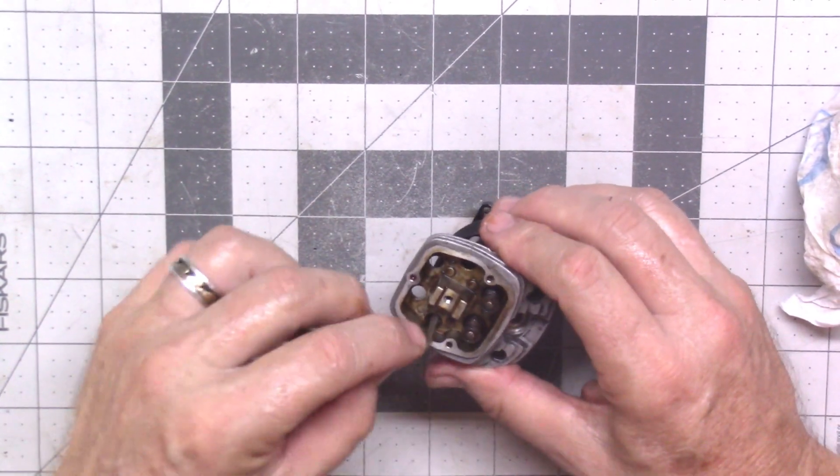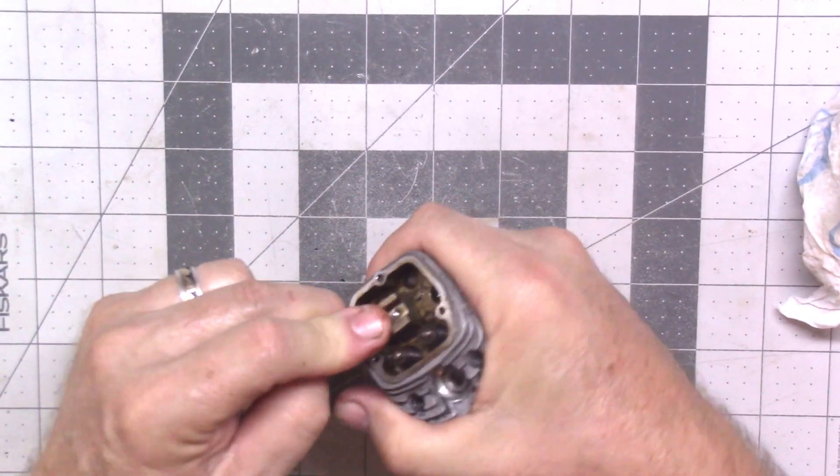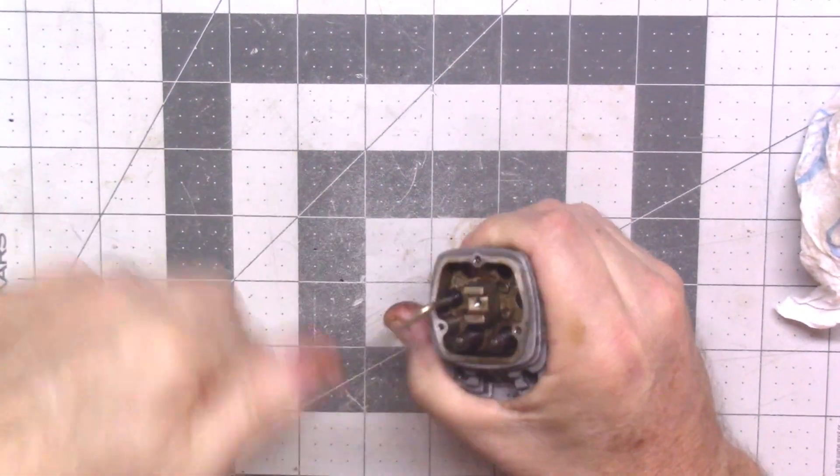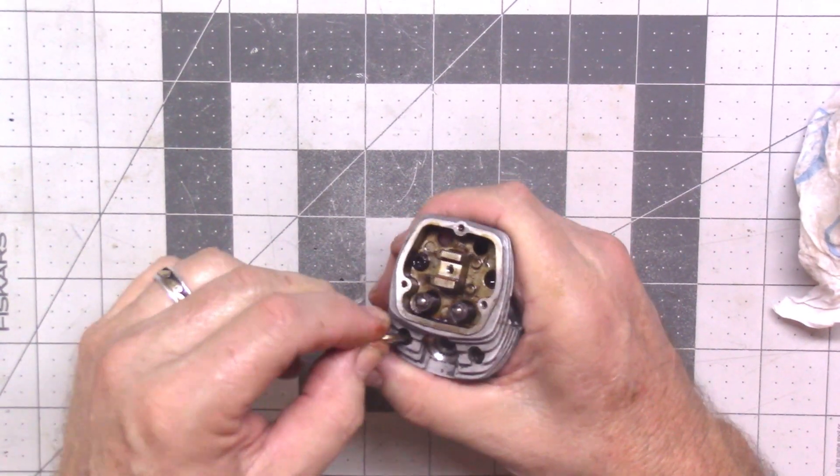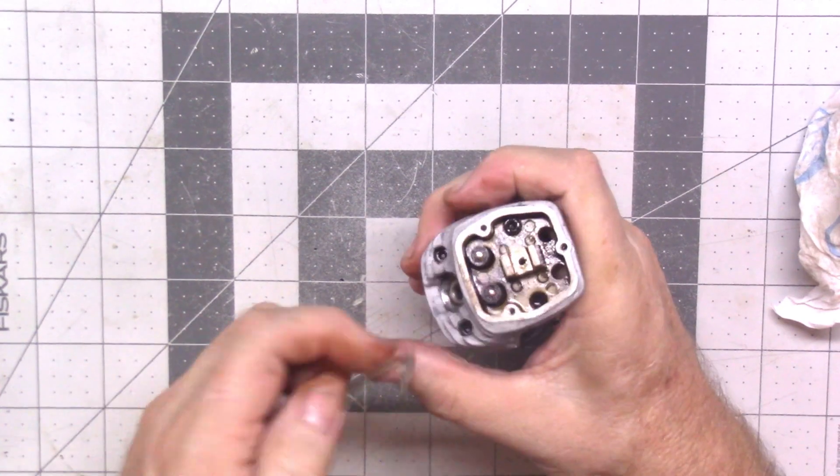This is where it might have been more intelligent to take the head off first because then I would have had the whole engine to grab onto and use as leverage. But, it doesn't seem to be a problem.